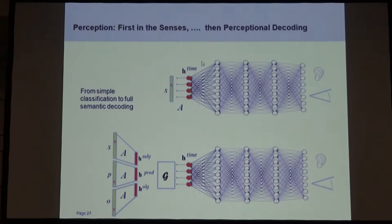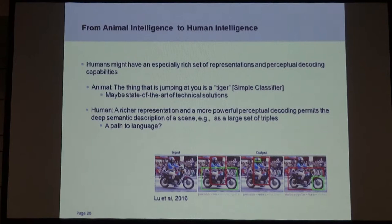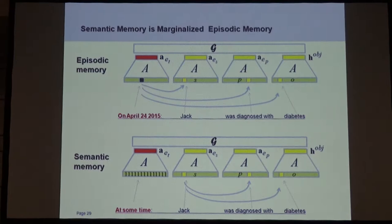In perception, a deep neural network with classification on the left side might be the level of some animals — there's a tiger jumping at me, I should do something. But maybe this is exactly where humans are much better: they really have a semantic understanding of a scene and can describe it in much more detail. There's work from the Stanford group going in this direction — still a huge challenge and definitely not solved. A person on a motorcycle, a person with a helmet, a motorcycle has a wheel, and so on. Computer vision people are highly interested in these things.